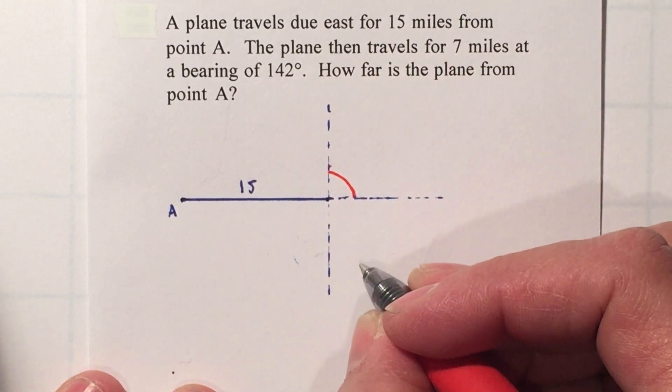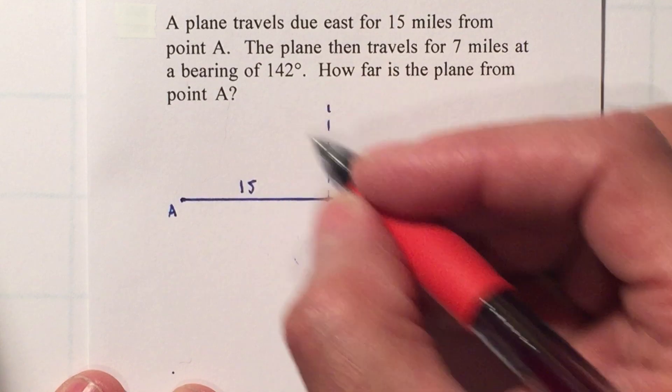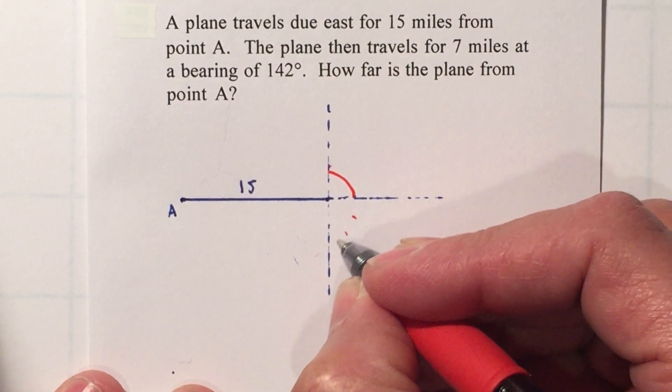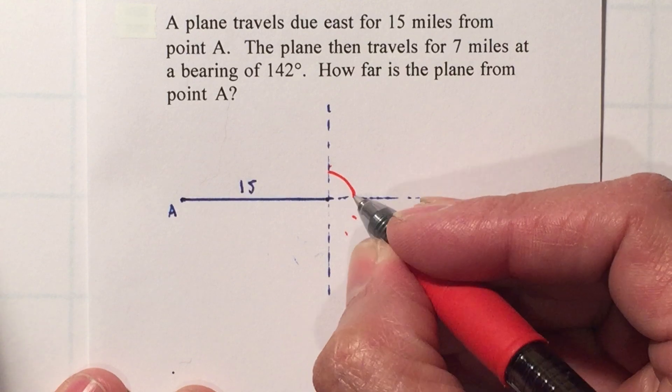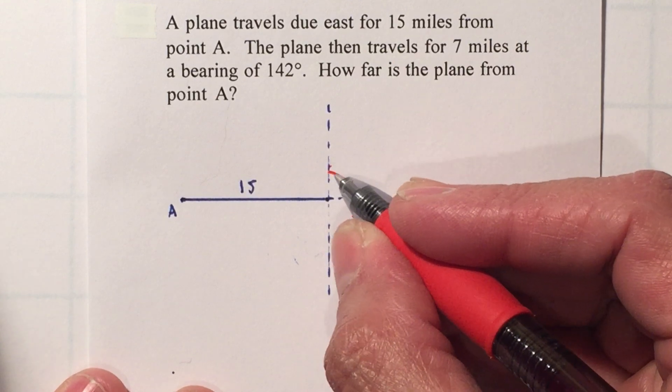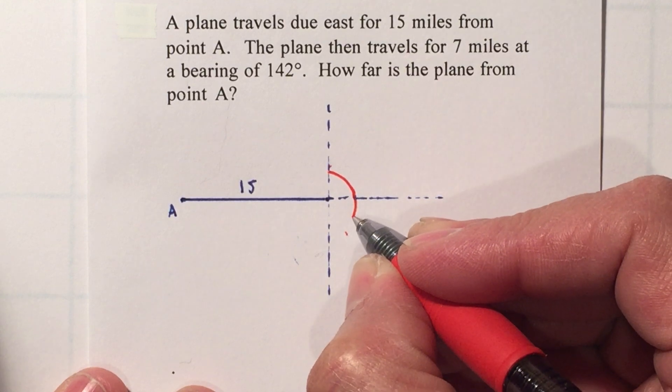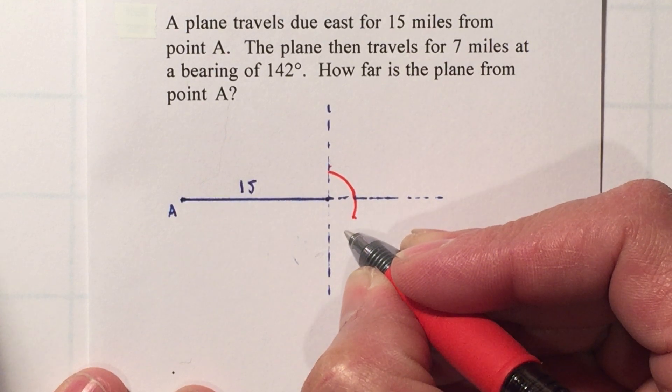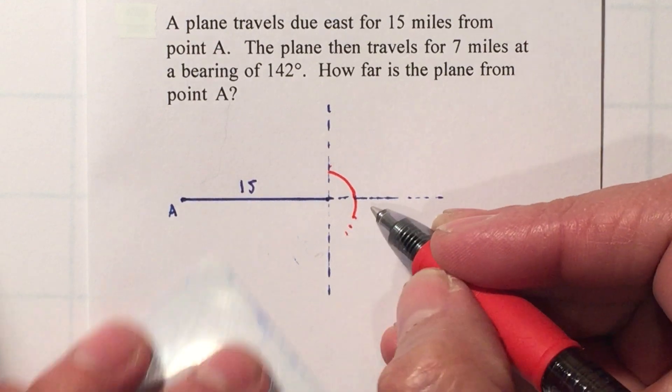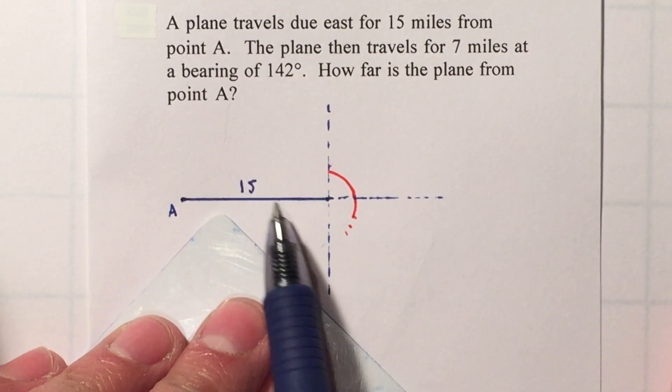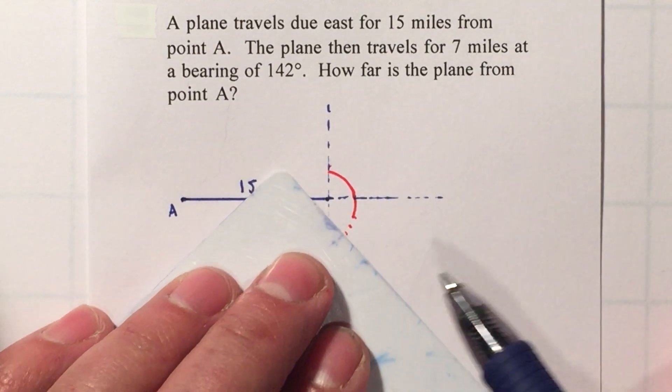Whenever it's a bearing, you want to go from the north towards the right. That is 90°, and I need 142°, so I'll be 120, 130. I divide this in three sections by placing two dashes, each one is 30°. So I'll be 90 plus 30 plus 30 is 120, and if I go through here it's 150. So I'm just going to go a little bit before that.